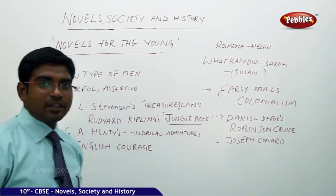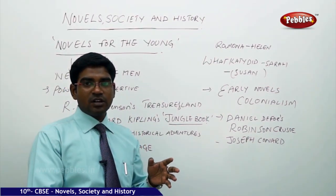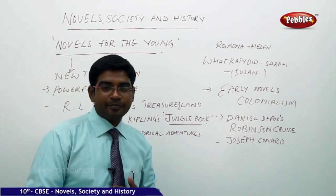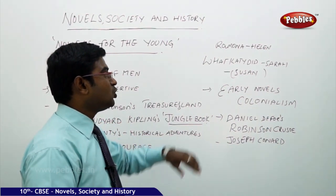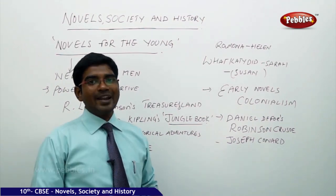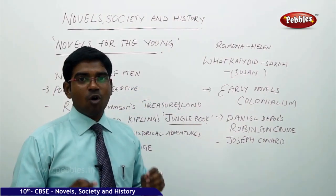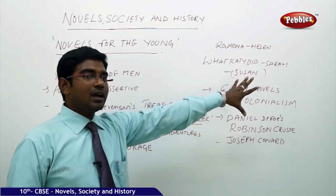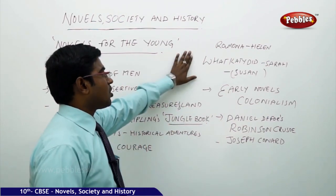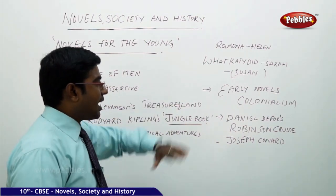Moving on to romantic books for adolescent girls: the first romantic books came into existence in the US, written by Helen Hunt Jackson with Ramona. What Katy Did was a book written by Sarah under the pen name Susan, who also brought a novel of romantic series. These books catered specifically to adolescent girls.